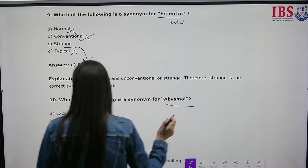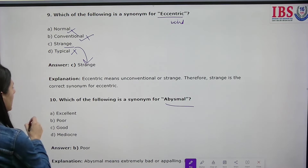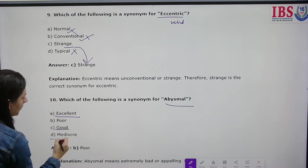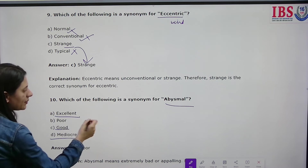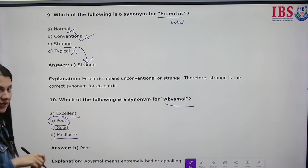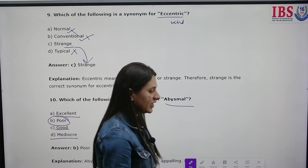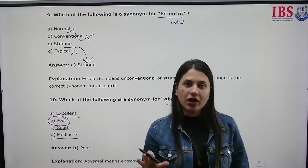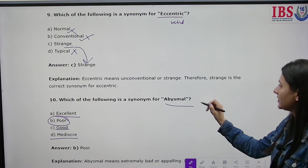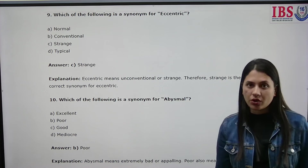Which of the following is a synonym for 'abysmal'? The options are excellent, good, mediocre, and shocking. Excellent, good, and mediocre are all positive or neutral remarks. Abysmal means very poor or very bad. So the answer is shocking — abysmal also means shocking.